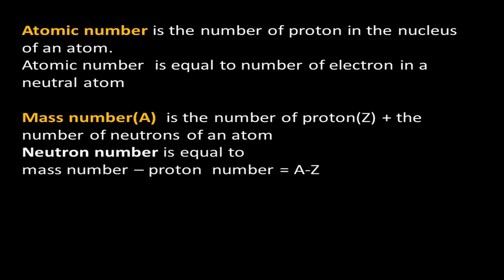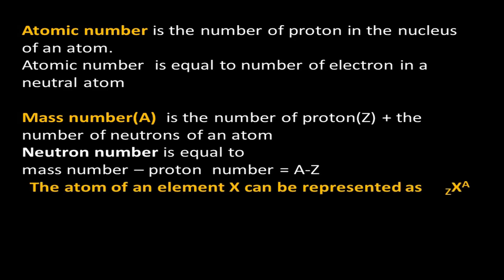The neutron number equals the mass number minus the proton number. An atom of element S can be represented with a superscript A (the mass number) and a subscript Z (the atomic number).